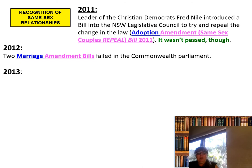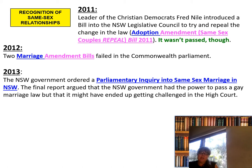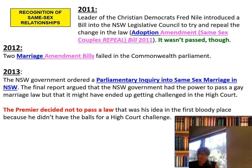In 2012, two marriage amendment bills failed in the Commonwealth Parliament. In 2013, the New South Wales government ordered a parliamentary inquiry into same-sex marriage in New South Wales. The final report argued that the New South Wales government had the power to pass a gay marriage law, but that it might end up getting challenged in the High Court. The Premier decided not to pass the law because he didn't have the courage to face a High Court challenge.